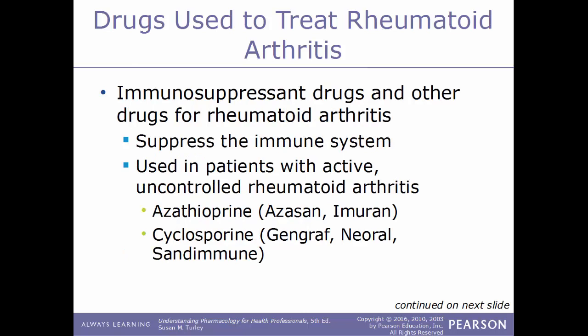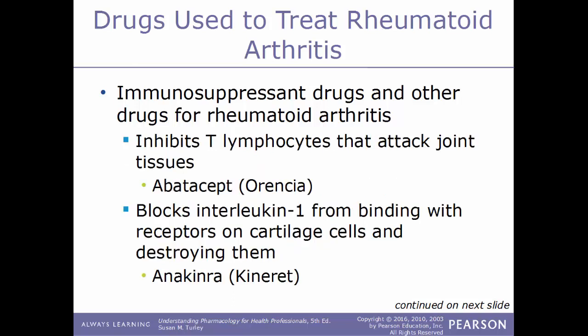Another type of drug used to treat RA are immunosuppressants, which, as the name implies, suppress the immune system. These are used for patients with active and uncontrolled rheumatoid arthritis. Examples include azathioprine known by the trade names Azasan or Imuran, and cyclosporine also known as Gengraf, Neoral, Sandimmune, or Neoral. Some immunosuppressant drugs and other drugs used to treat RA have very particular methods of action.